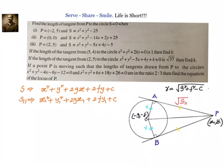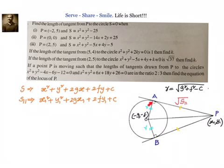The general form of the circle is S equal to 0: x² + y² + 2gx + 2fy + c = 0, where the center of the circle is given by (−g, −f) and the radius is given by √(g² + f² − c).